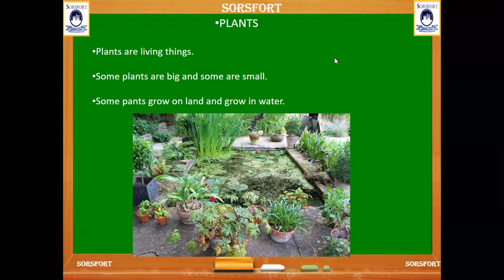What are plants? Plants are the living things which grow around us. There are many kinds of plants around us. Plants have leaves, flowers, fruits, roots, stem, branches, etc. We can see here many plants — some plants are big and some plants are small, and also some plants grow on land and some grow in water. Now let us see about kinds of plants.